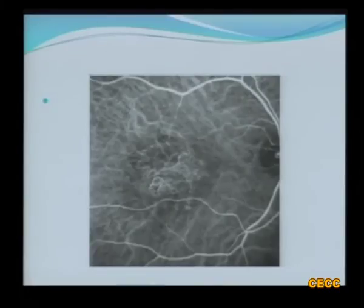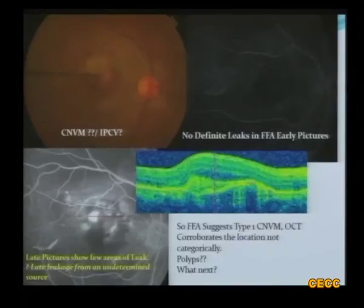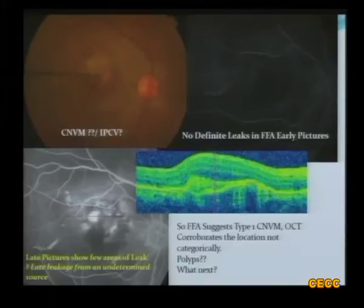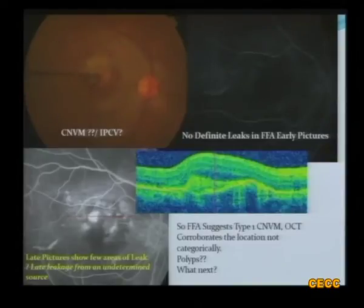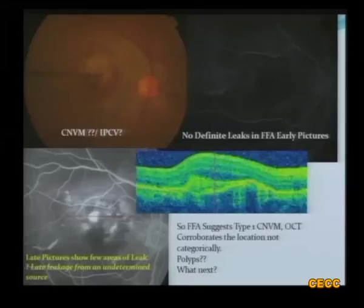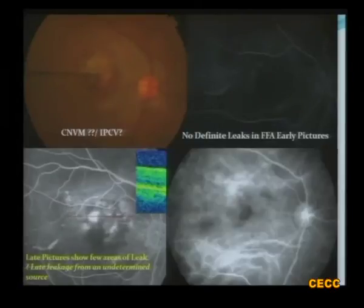ICG actually demonstrates the occult CNVM or the sub-RPE network. In another case showing the other pattern of occult CNVM, there is no leak in the early phase but the late picture shows a few areas of leak — always described as late leakage of undetermined origin. The OCT demonstrates the CNVM. But with this fundus picture showing a lot of hemorrhages, you need to exclude something like polyps or IPCV. That is why I would always do an ICG in this case, and the ICG demonstrates a hotspot confirming the occult CNVM.